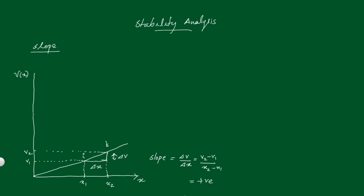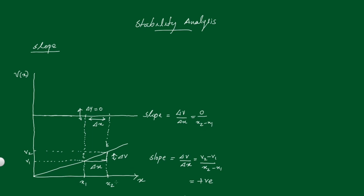Now considering another condition: v(x) is constant with respect to x. What is the slope here? Slope equals delta v divided by delta x. There is a delta x because we are considering x1 and x2, so there is a delta x. But there is no delta v — that is, delta v equals zero. So slope equals zero divided by delta x, which equals zero.